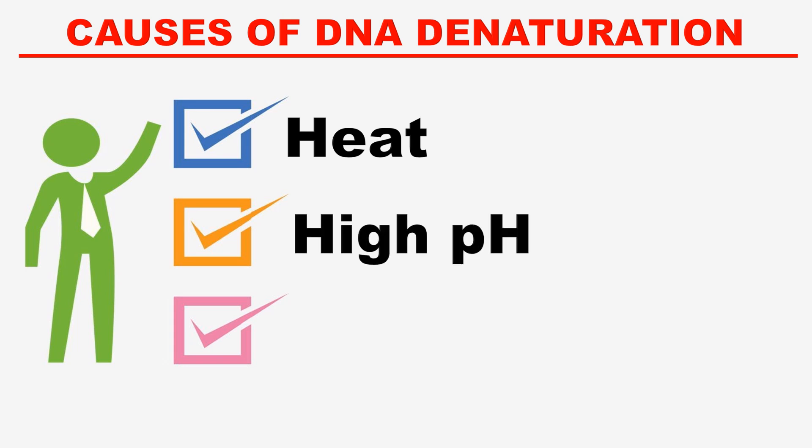The next cause is high pH. If we increase the pH of the DNA environment, the DNA will get denatured because DNA is very highly sensitive to pH. At a pH greater than 9, or even greater than 11, the DNA gets denatured because the ions interfere with the base pairing and hydrogen bonding between the bases.